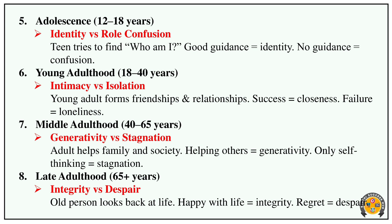The fifth stage is adolescence — this is the main stage. We will try to create an identity. If we encourage them correctly, they create a strong identity. If not, they will experience role confusion. So in adolescence, the struggle is identity versus role confusion.